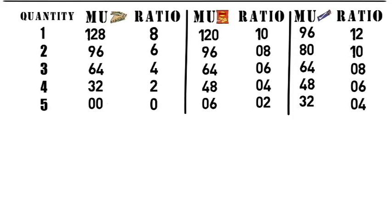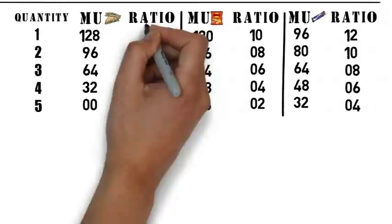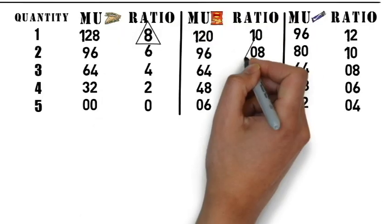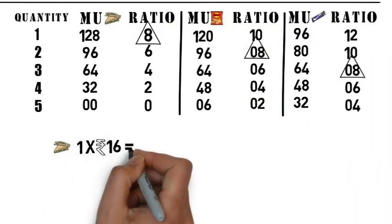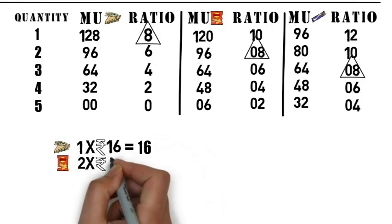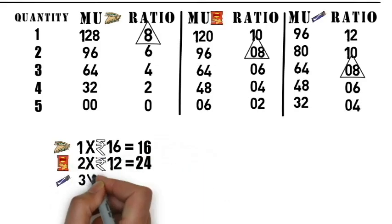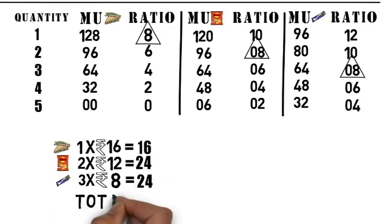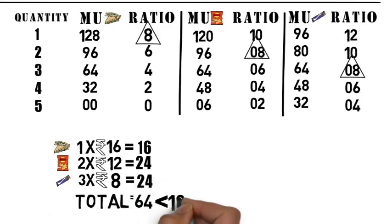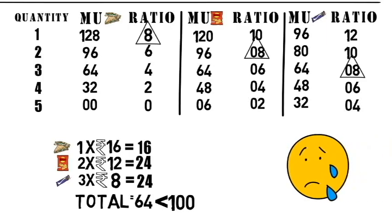As a rational consumer, your friend will try to equate the ratio of marginal utility to price of the three commodities. Let's say your friend equates the ratio of 8 for all three commodities. In that case, he'll be consuming 1 sandwich for Rs.16, 2 chips for Rs.24 and 3 chocolates for Rs.24. However, by doing this, your friend is not spending the entire Rs.100 but only Rs.64.